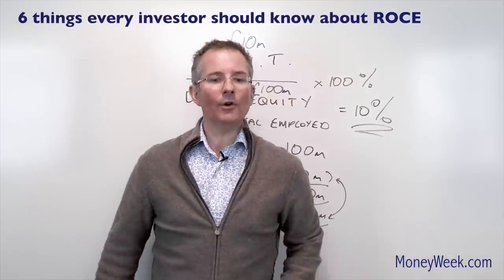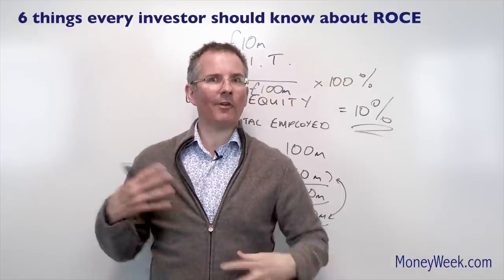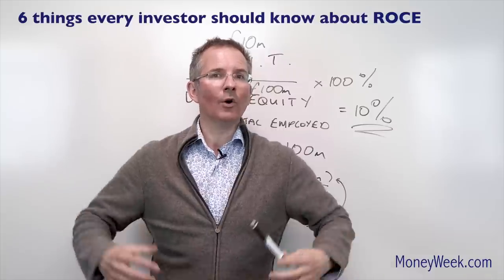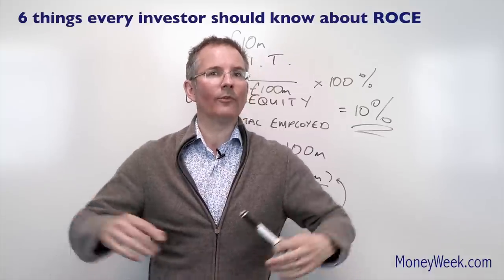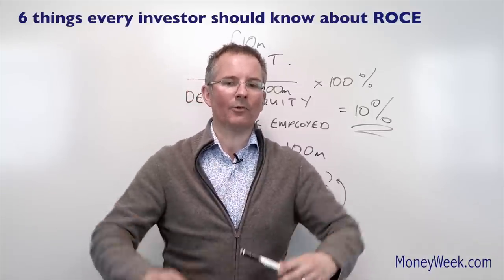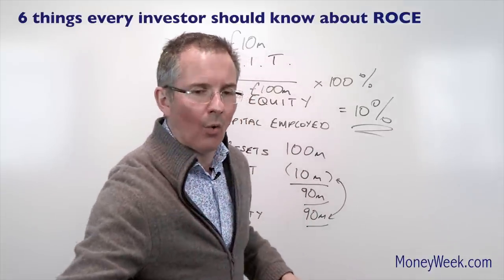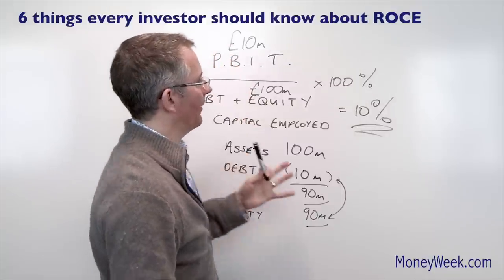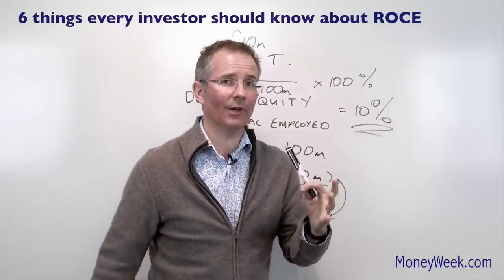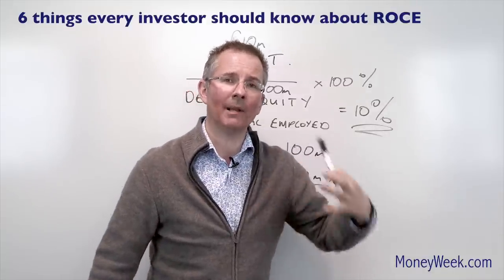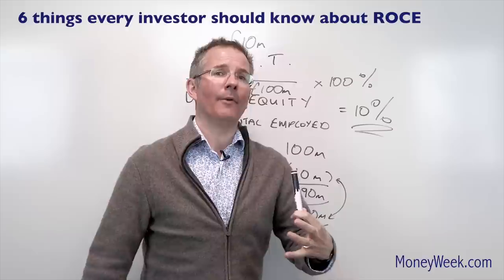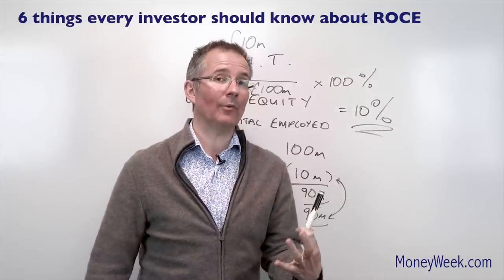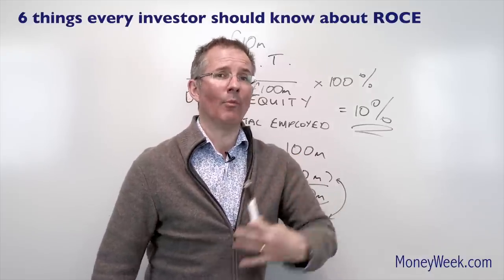Number three, you can do some quite flash stuff with it called DuPont analysis. All that's saying is this: you can break the ratio down. This is one of its advantages — to get even more information out about a business. This is a beginner's guide, so I'm just going to give you a flavour of how that would work.